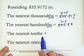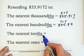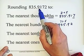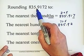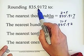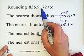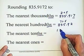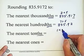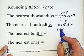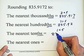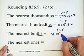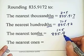The nearest tenth is the first digit on the right side of the decimal point, which is 9. Check the right side: it is 1. Since 1 is less than 5, drop it. The answer is 835.9.